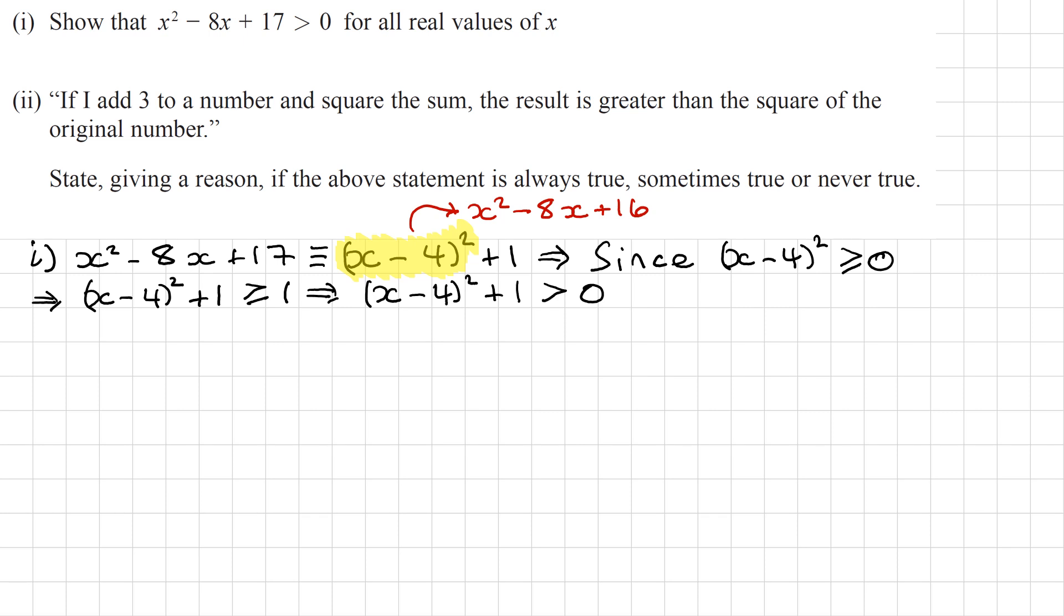So I always want to finish with a conclusion. This was the completed squared form. I've proved that this is greater than 0. So I'll just write down, therefore, my original quadratic x squared minus 8x plus 17 is greater than 0 as required. Okay, second part of the question here.